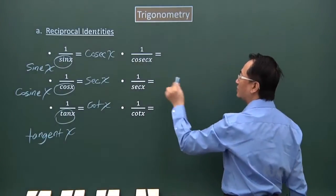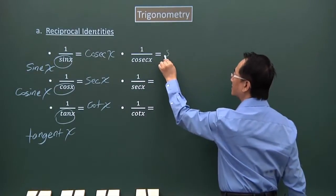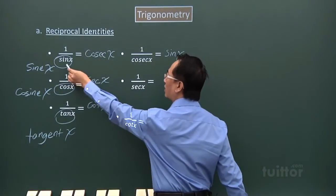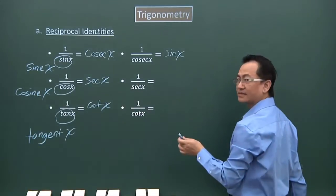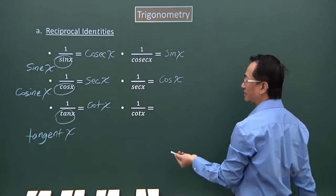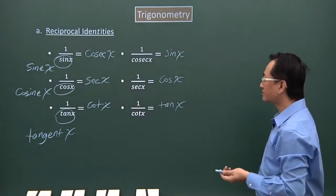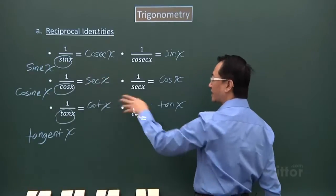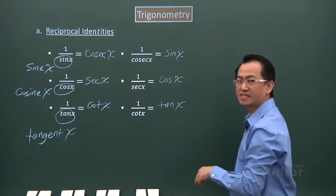So 1 over secant x — because secant starts with a 'c', you expect something starting with an 's' — gives you sin x. And 1 over cosecant x gives you cos x. Then 1 over cotangent x will be just tangent x. For reciprocal identities, there are 6 total, but if you memorize just 3, you can derive the other 3 by simple manipulation.